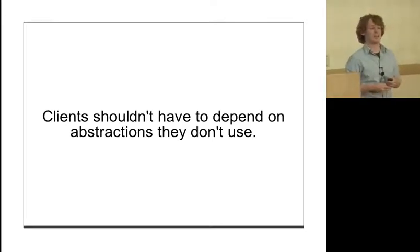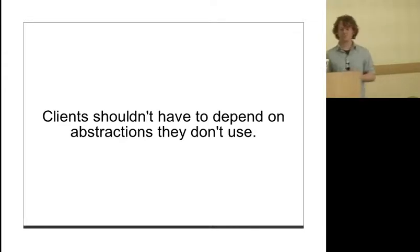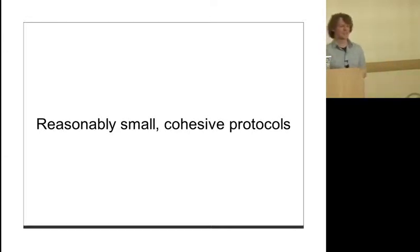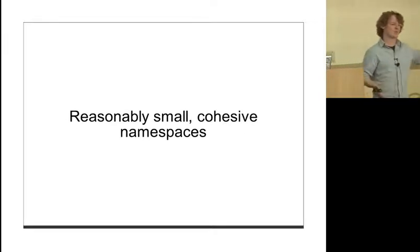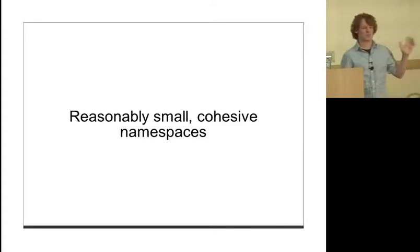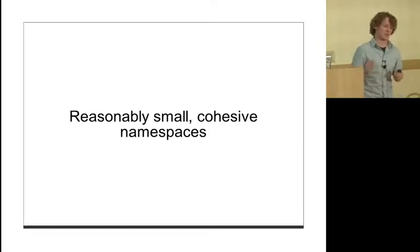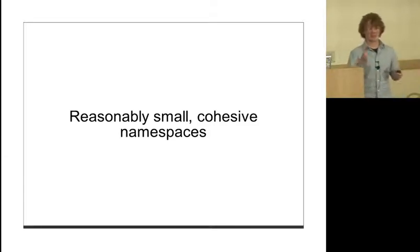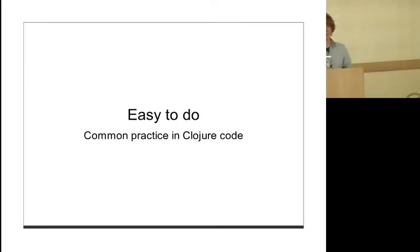The interface segregation principle says clients shouldn't have to depend on parts of abstractions they're not going to use. So reasonably small, cohesive protocols and namespaces. Clojure core is a huge namespace and there are good reasons for it - it's the core of the language, it's special that way. But in my projects I try to make small namespaces and small protocols. It tends to make things easier to reason about and to keep the whole abstraction in your head at one time.